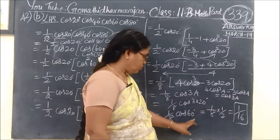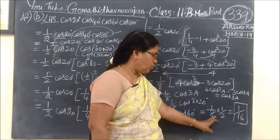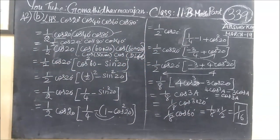So this equals cos 60. Cos 60 equals 1/2. Therefore, 1/8 times 1/2 equals 1/16. That is our answer.